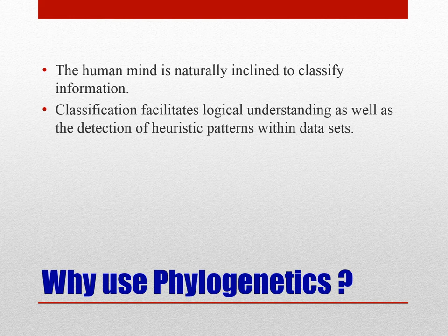So why do we use phylogenetics? As human beings, we tend to classify information using different schemes because when we classify information we can understand systems better. This also applies to living systems. For instance, a plant containing a certain set of genes may be similar to another plant which has a similar set of genes, yet different from a human being which has a different set of genes. Researchers tend to classify organisms based on their genes, and phylogenetics assists us in this classification.